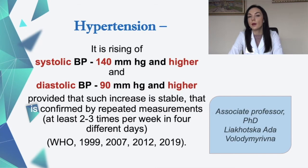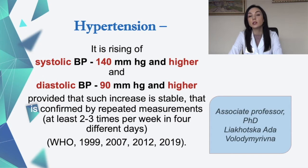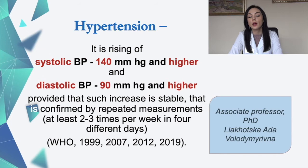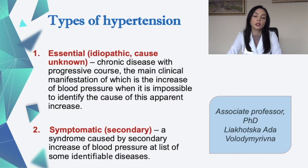What is hypertension? It is the rising of systolic blood pressure to 140 mmHg and higher, and diastolic blood pressure to 90 mmHg and higher. It is confirmed when such increase is stable, as confirmed by repeated measurements at least 2–3 times per week on 4 different days.